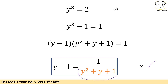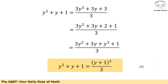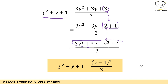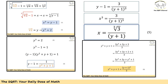Now I want to simplify the denominator y squared plus y plus 1 further. To do this, I'll multiply it by 3 and divide by 3, giving (3y² + 3y + 3)/3. Splitting 3 into 2 plus 1 and replacing 2 with y cubed, the numerator becomes (y + 1) cubed. So overall: y squared plus y plus 1 equals (y + 1) cubed over 3. Let's call this equation 4.